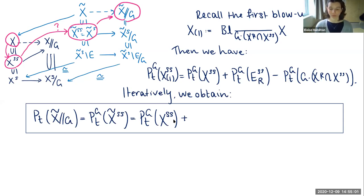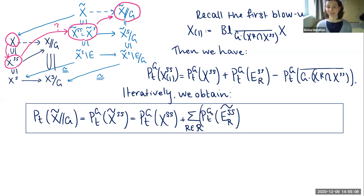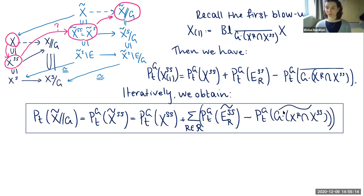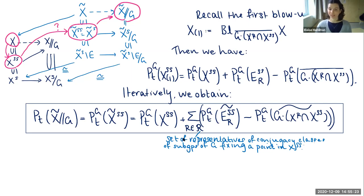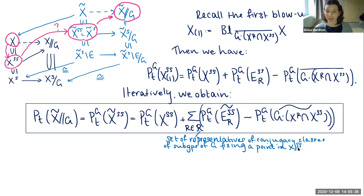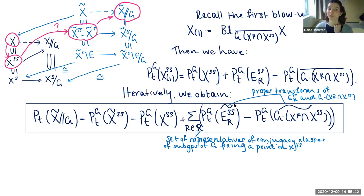Iterating this blowup formula, we obtain an expression for the equivariant Poincaré series: we take the equivariant Poincaré series of the semi-stable locus, add the contributions from all exceptional divisors, and subtract the contributions from all centers of the blowups. Here the set of curly R represents conjugacy classes of subgroups of G that fix a point in the semi-stable locus, and the tilde notation denotes taking proper transforms of the exceptional divisors. This formula can be rearranged to give something easier to apply in practice.